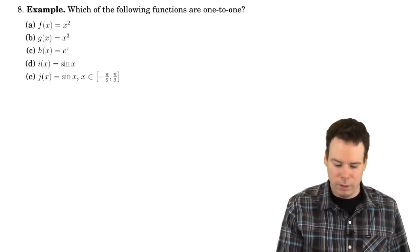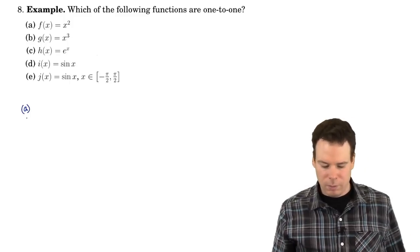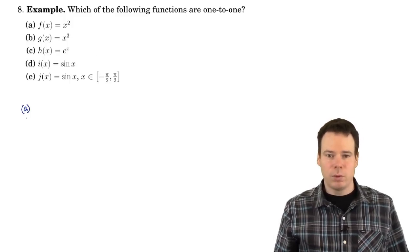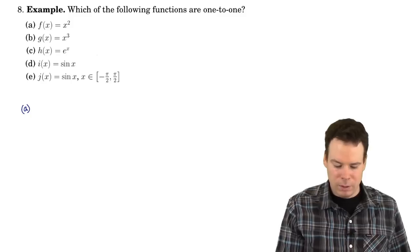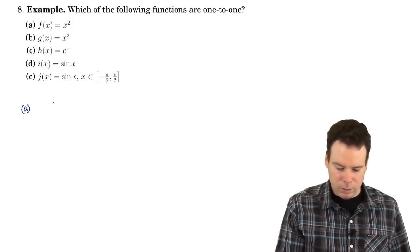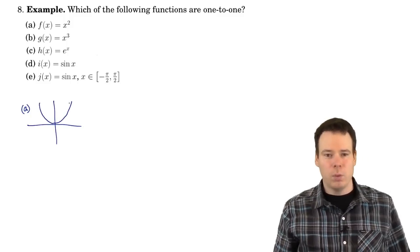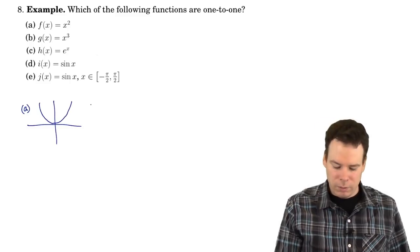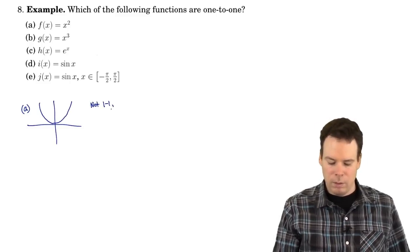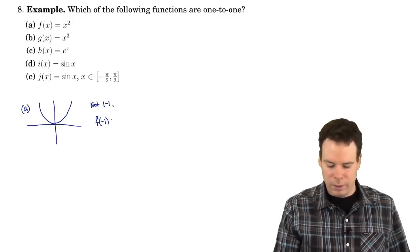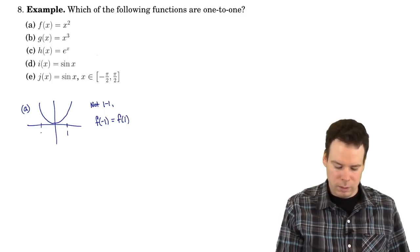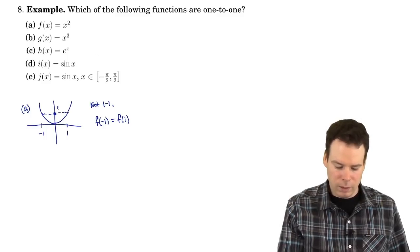Which of the following functions are one-to-one? The first one, f(x) = x², is a parabola. Is it one-to-one or not? No, it's not one-to-one, because for example f(−1) equals f(1). Those are two inputs — 1 and −1 — and yet they give rise to the same output, namely the value of 1.